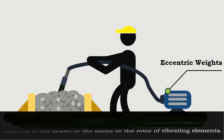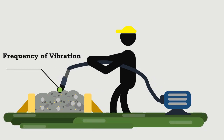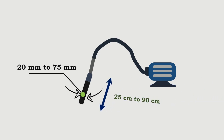The frequency of vibration caused by the needle vibrator varies up to 12,000 cycles of vibration per minute. The diameter of the needle varies from 20 millimeters to 75 millimeters, and its length varies from 25 centimeters to 90 centimeters.